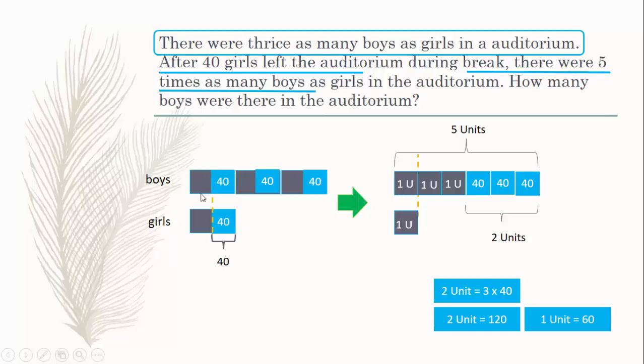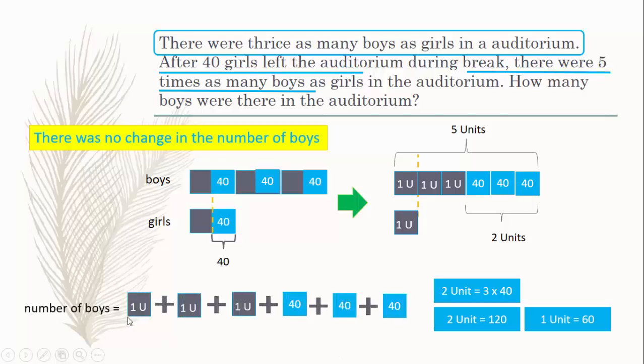We found out that one unit here is 60. This one unit is the same as the size unit that you see here, not including the 40. There was no change in the number of boys. So number of boys is equal to one unit plus one unit plus one unit plus 40 plus 40 plus 40. One unit is 60, so that is equal to 300 boys.